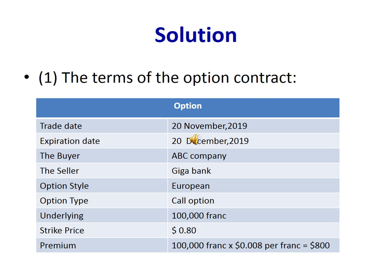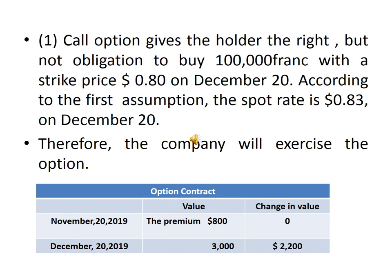We need to explain the terms of the option contract. The trade date was November 20 and the expiration date is December 20. The buyer is APC company and the seller is Gigabank. Option style: European. Type: call option. Underlying: 100,000 francs. Strike price: $0.80 per franc. Premium: 100,000 francs × $0.008 per franc = $800.